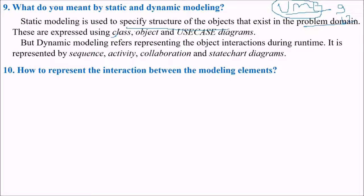We have classes, objects and use case diagrams. Dynamic modeling refers to representing the object interactions during runtime. It is runtime, it is not static, which is represented by the sequence, activity, collaboration, state, chart diagram.